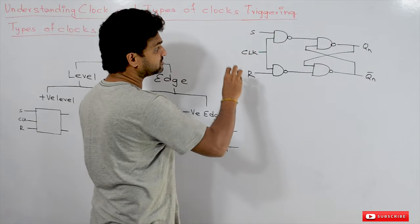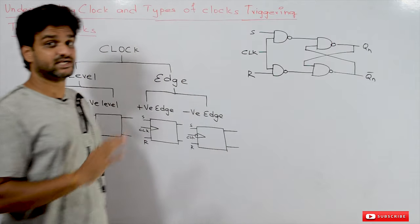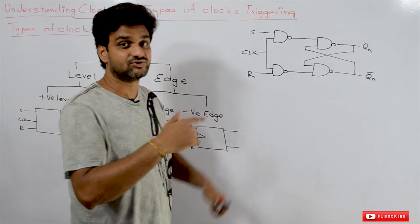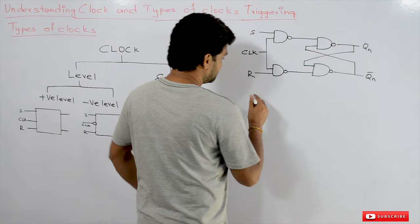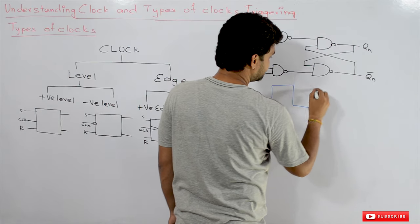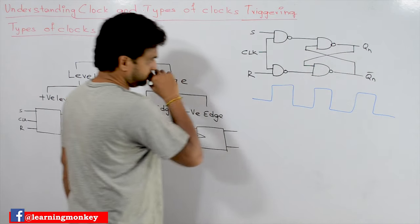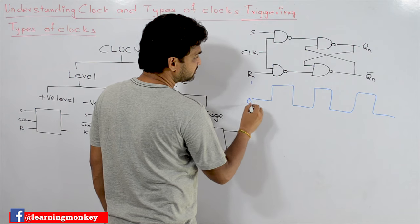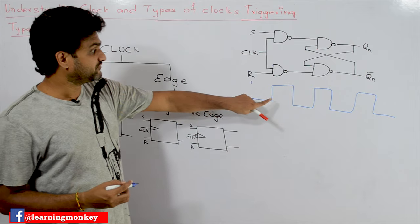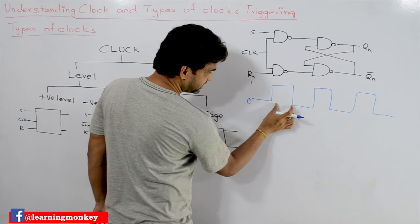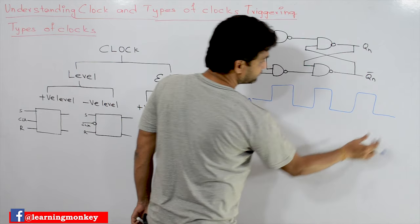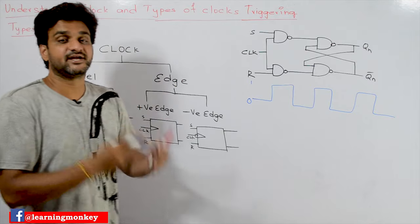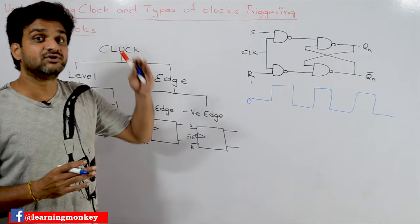In one of our videos on SR flip-flop, we got an introduction to clock. There we said that a clock is a continuous signal which generates zeros and ones in a uniform way. So this is what we call a clock — 0, 1, 0, 1, 0, 1 — and in that way the continuous flow of zeros and ones is generated by a clock.